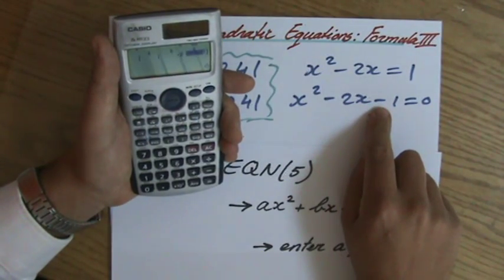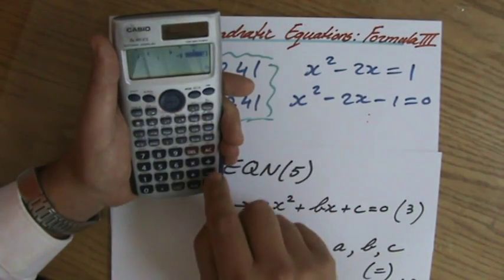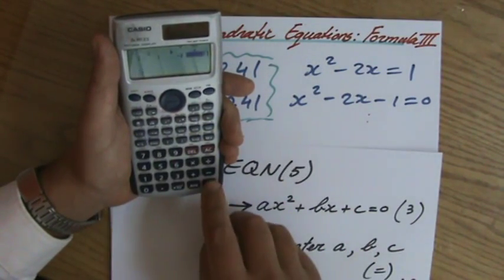And it will bring me to C. What is the value of C? That's a minus 1. Careful, you have to equal to 0 first. Minus 1. Minus 1. Equals.